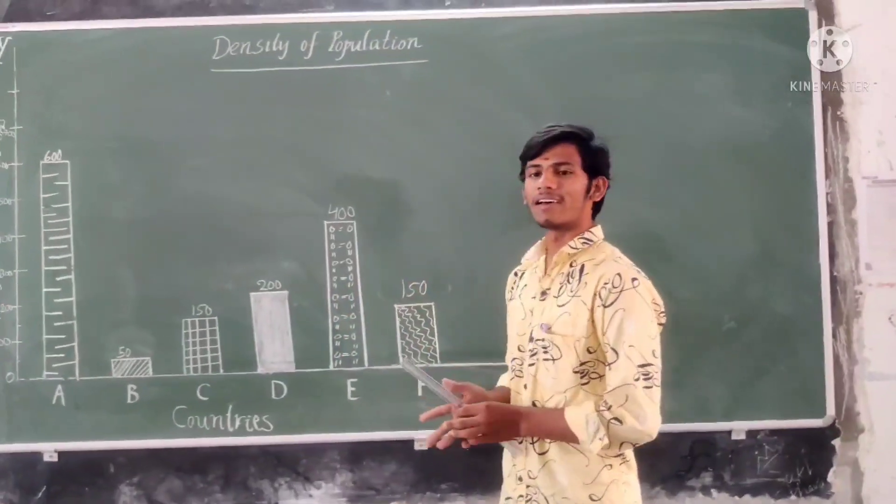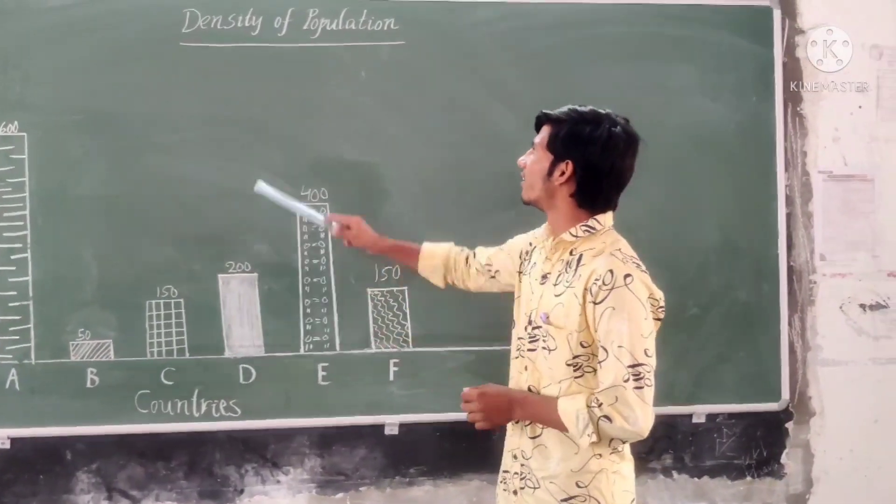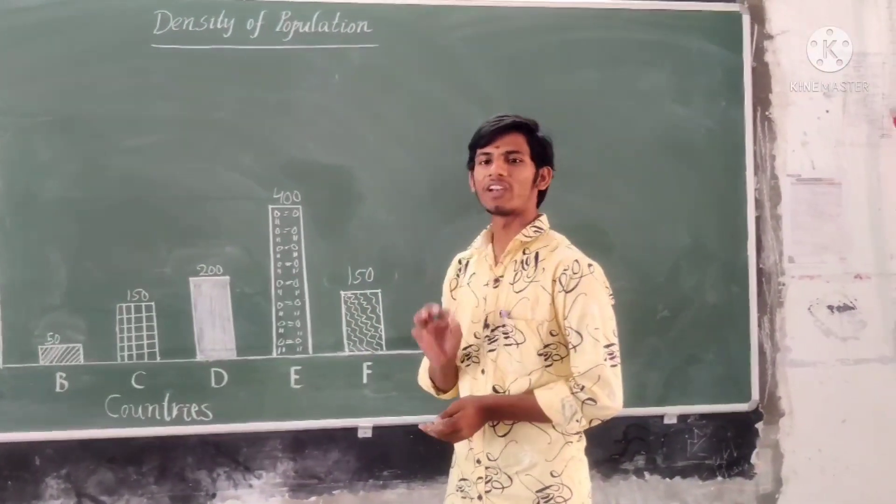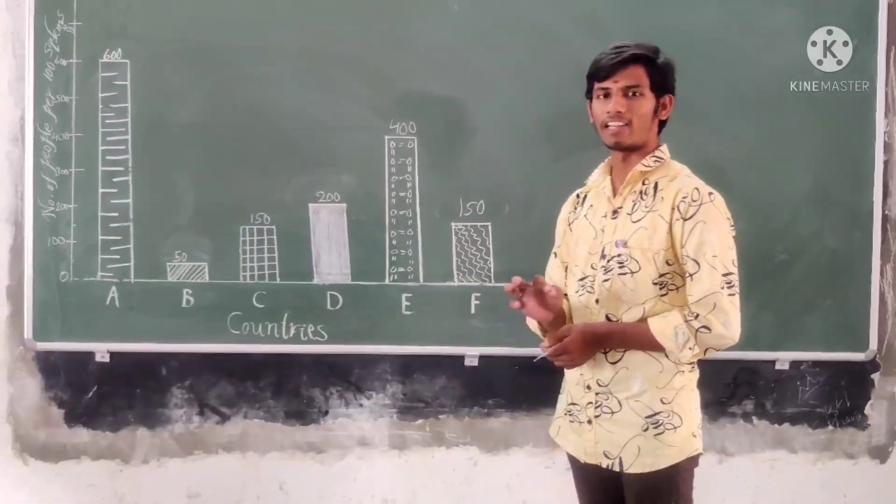The picture given here is a bar chart. It beautifully describes the density of population in different countries, namely A, B, C, D, E and F.